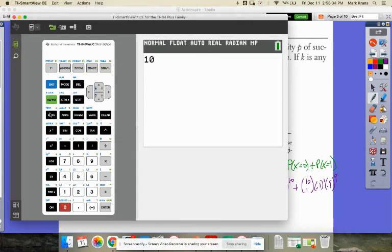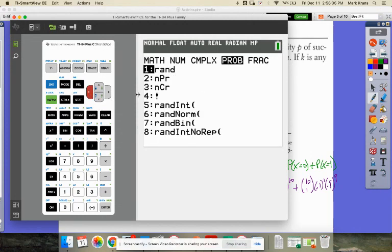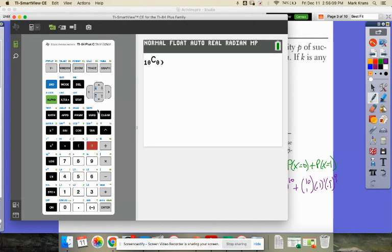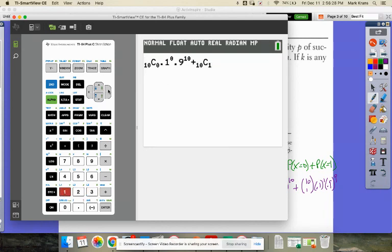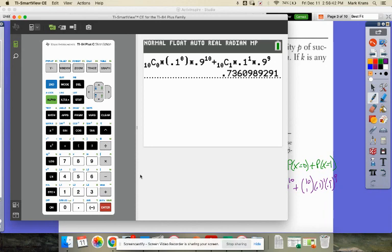I would say 10 math, you go over to probability, choose zero times, 0.1 to the zero. That's just going to come out to one and 0.9 to the 10th plus 10 math choose one times 0.1. Here's my one failure and times, oh, I got to get out of that exponent times my nine successes. Boom. And we get about 0.736. So,